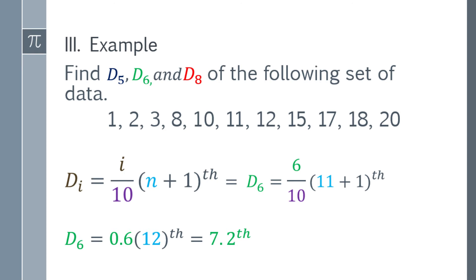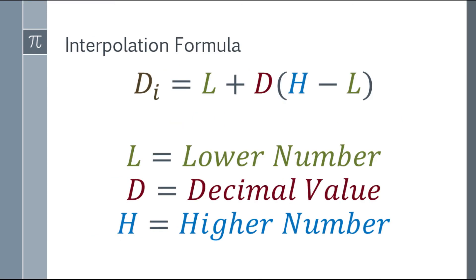What is the interpolation formula? We have D sub i equals the lower number plus the decimal value, multiply the decimal value by the higher number minus the lower number.